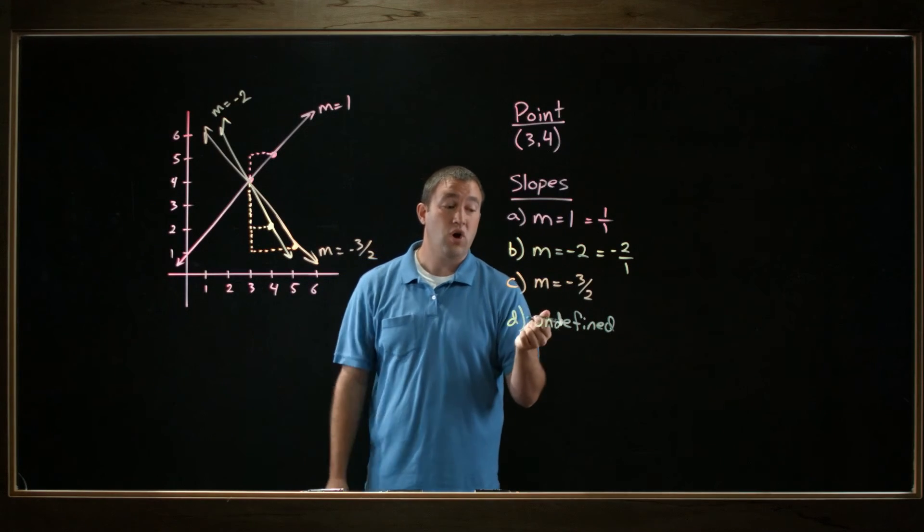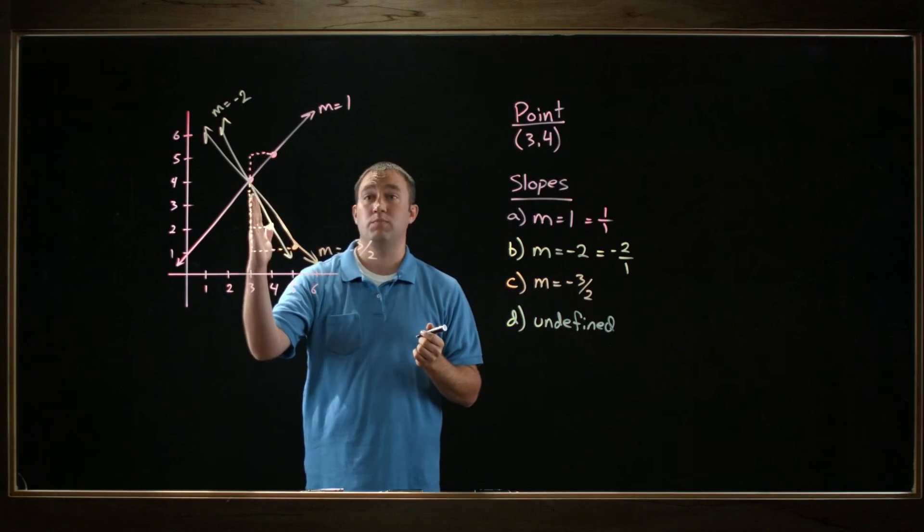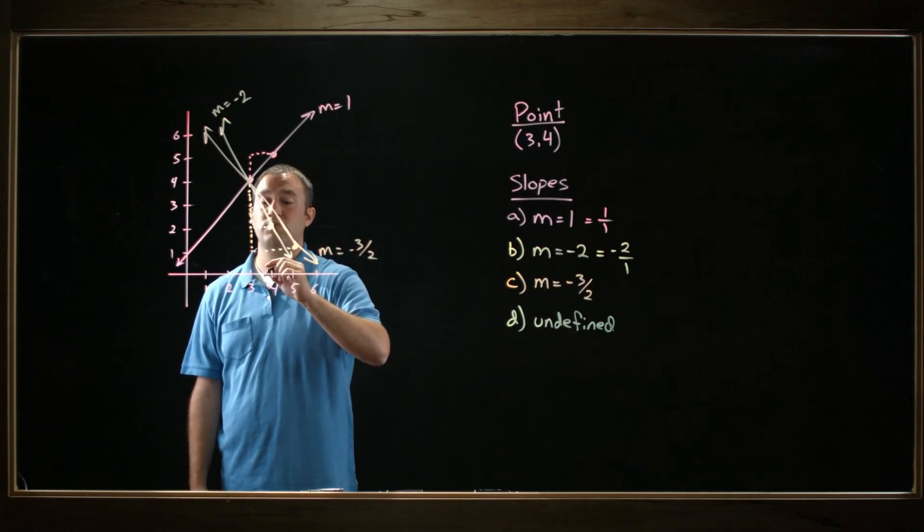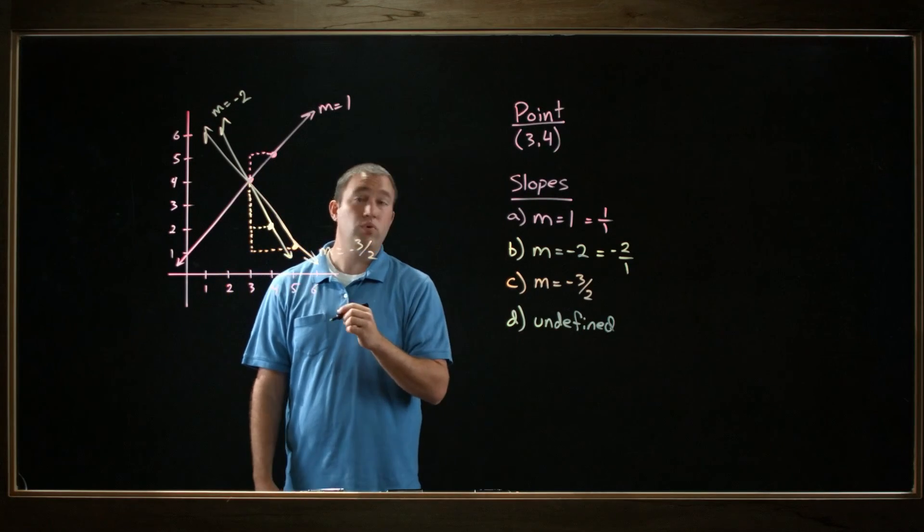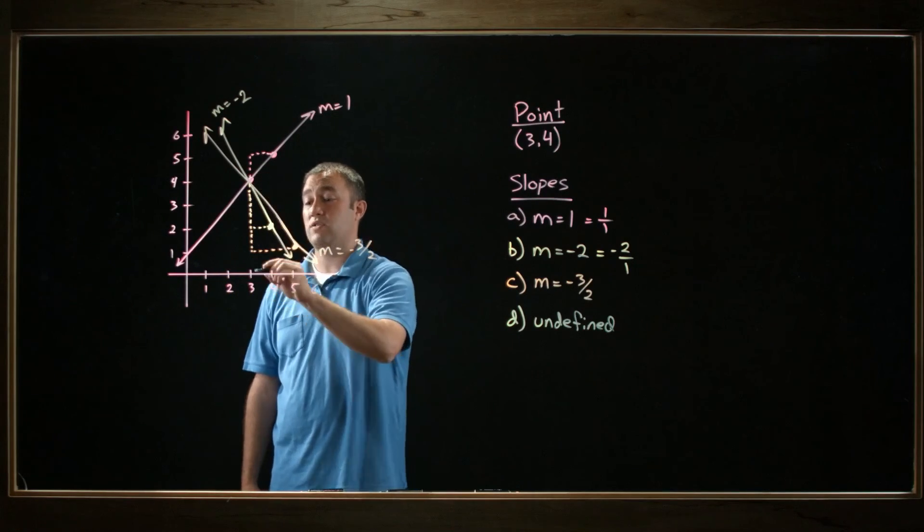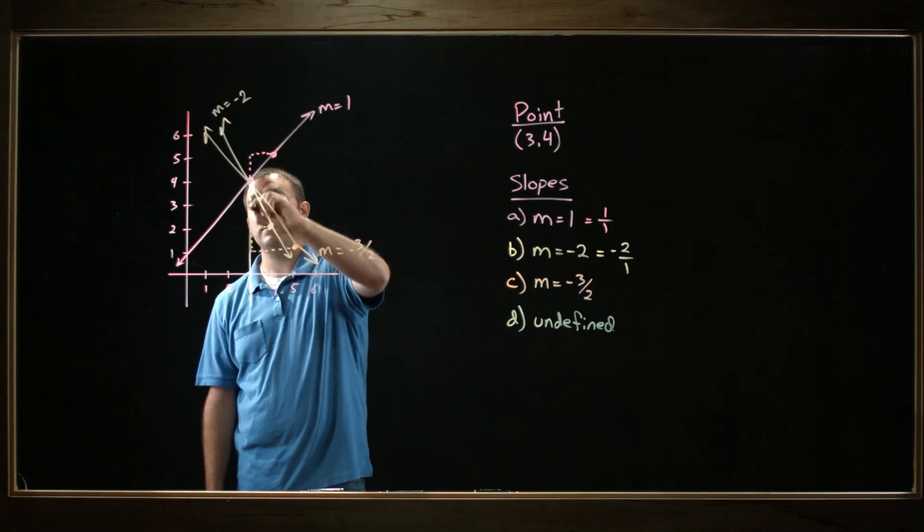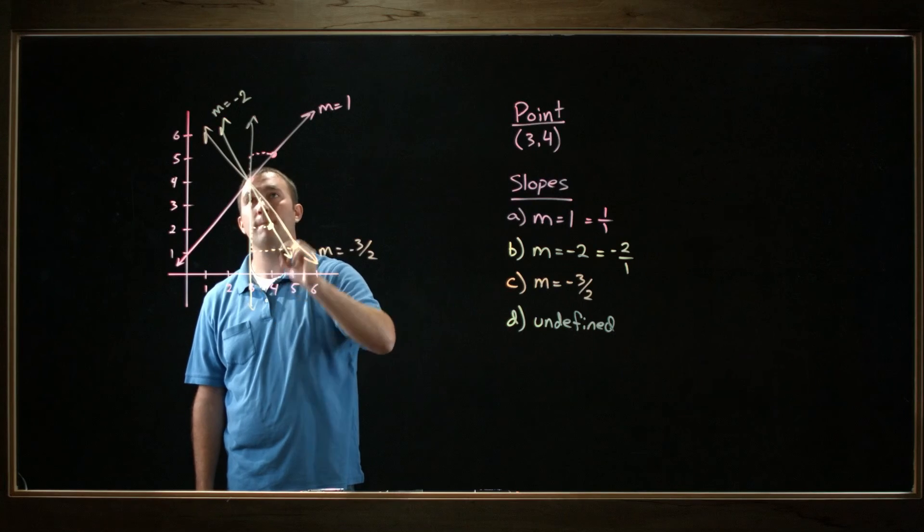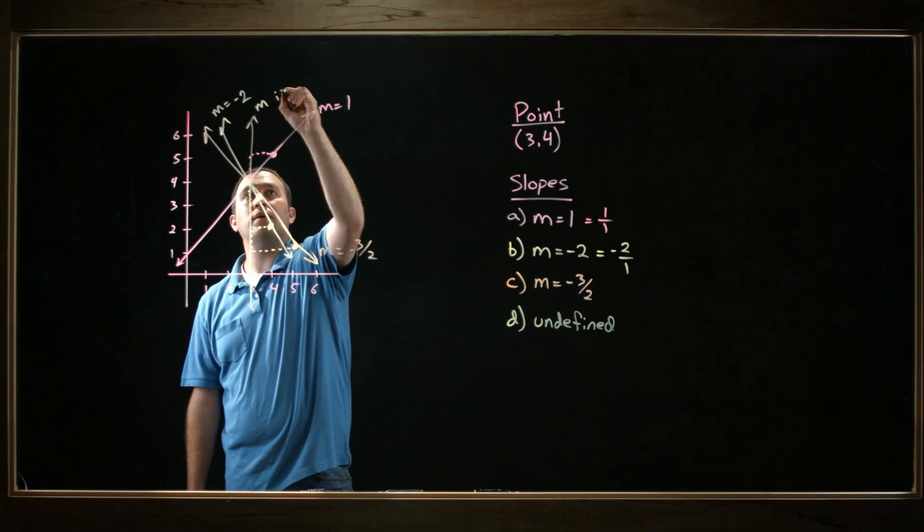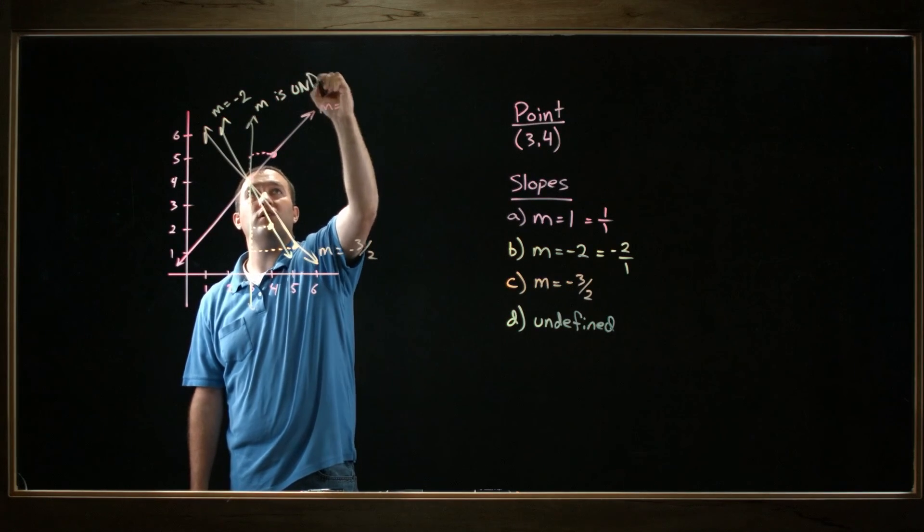So this means draw a vertical line that goes through this point (3, 4). Vertical lines are nice and easy. I just draw them straight up and down. It should go through the point (3, 4) and also hit the x-axis at x equals 3, so it does something like this, and here m is undefined.